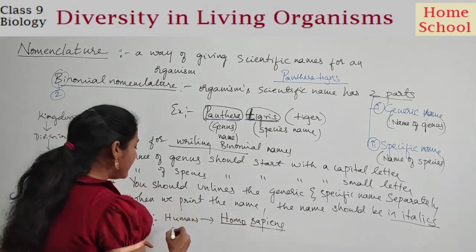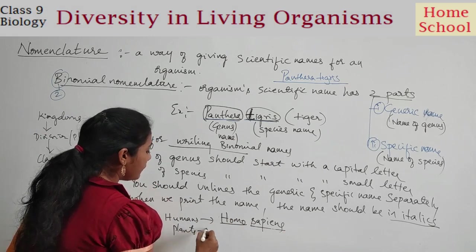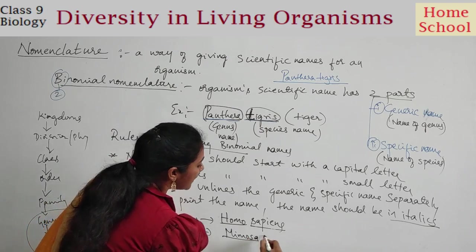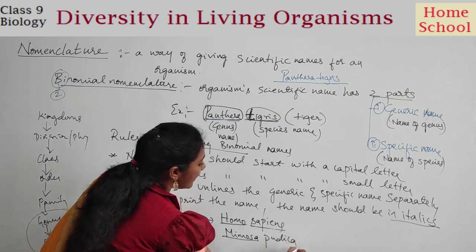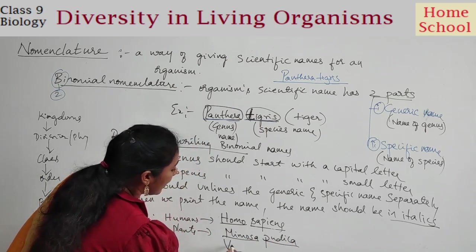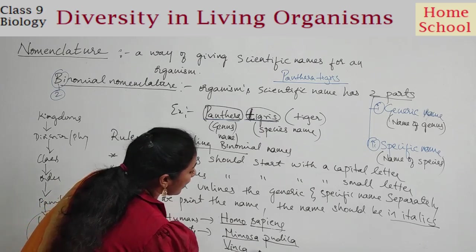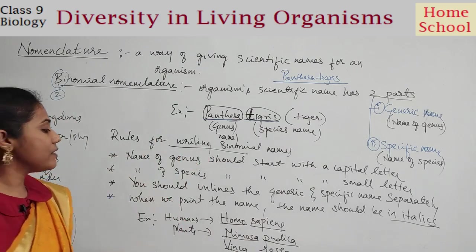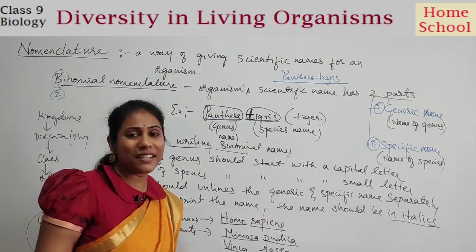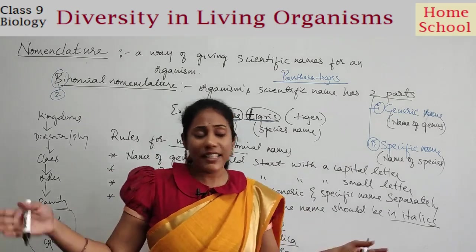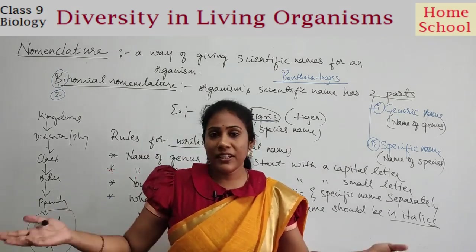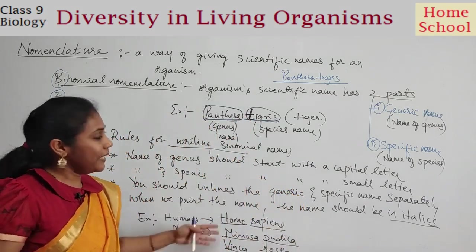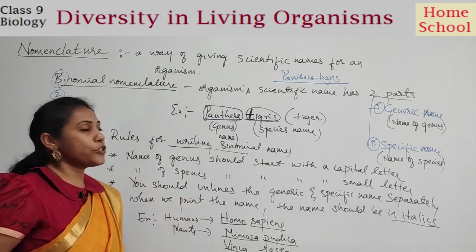We also have scientific names for certain plants. For example, Mimosa pudica and Vinca rosea. These are garden plants — flowering plants we see in our homes and in our day-to-day life. This is how we name different organisms according to these rules.